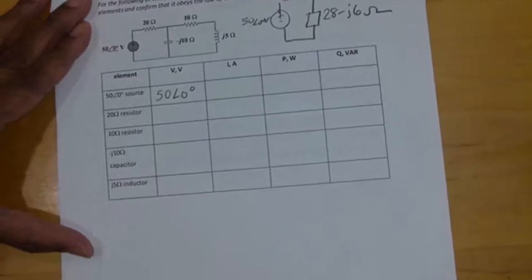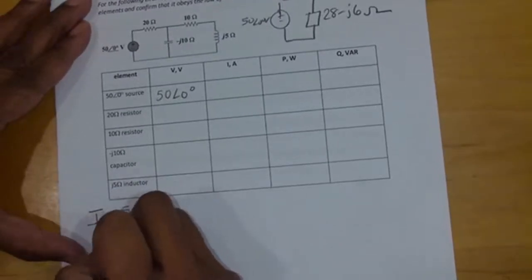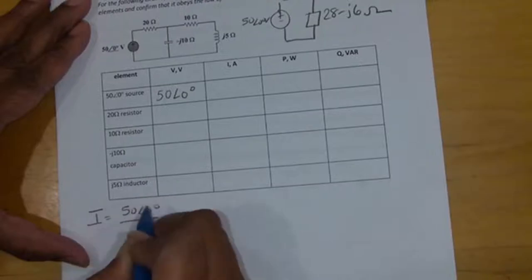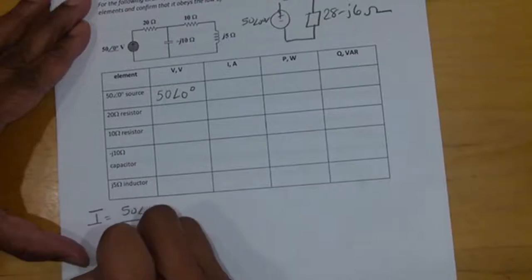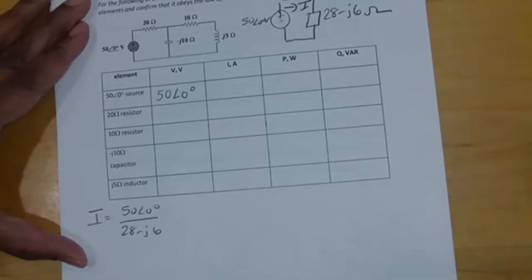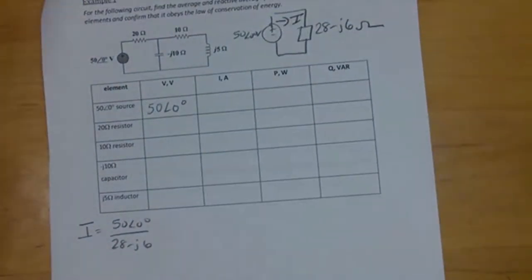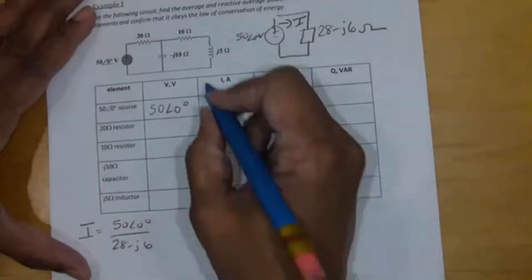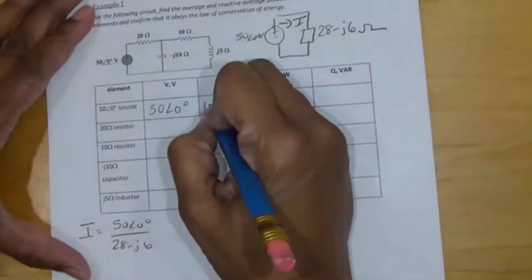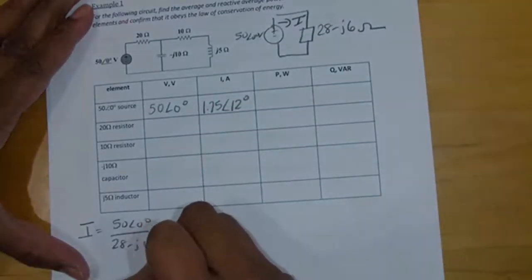So if we want the current through the voltage source, it should be I equals 50 with an angle of zero degrees divided by 28 minus J6. I equals 50 divided by 28 minus J6, and that equals 1.75 with an angle of 12 degrees.